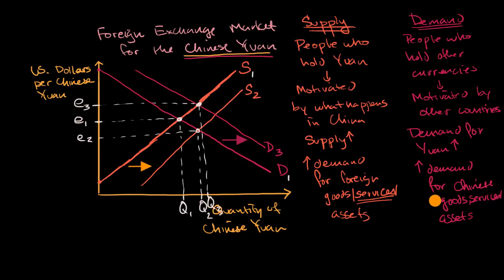And so I want to convert my dollars into yuan. I want to buy yuan with my dollars so that I could buy, so I could participate in the Chinese stock market or buy shares in a, or somehow buy some Chinese real estate or whatever else it might be.